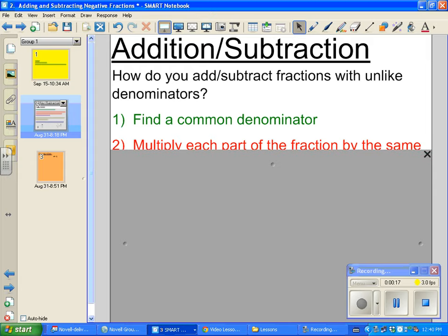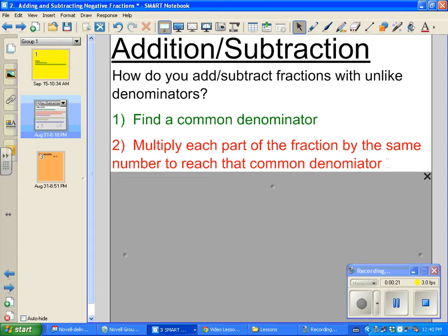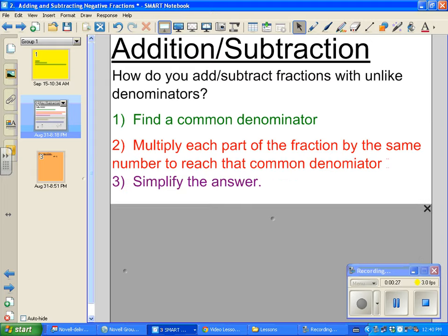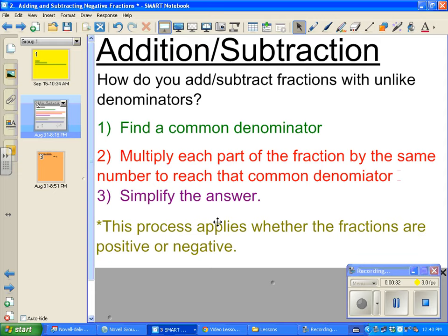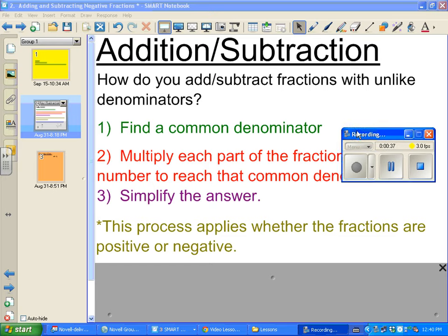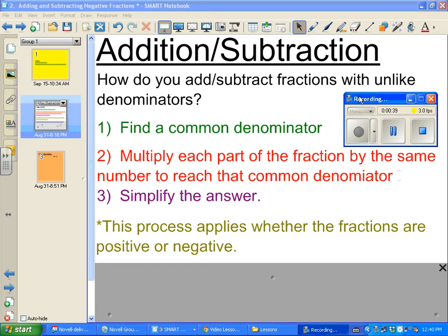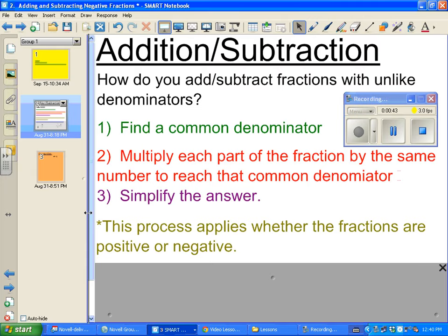We start by finding a common denominator. We multiply each part of the fraction by the same number to reach that common denominator. And we simplify the answer. And this process, which you've demonstrated you know pretty well based on your pre-assessment results, holds true whether the fractions are positive or negative.